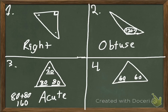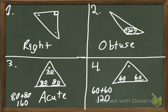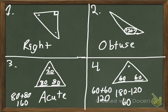For number four, I know two angles are 60 degrees each. So 60 plus 60 is 120, and 180 minus 120 gives me 60 — so the third angle is also 60, meaning all angles are equal. This is equiangular.